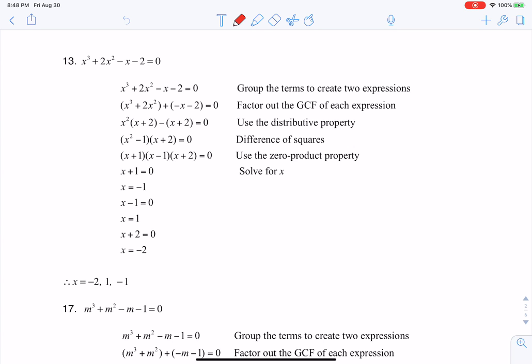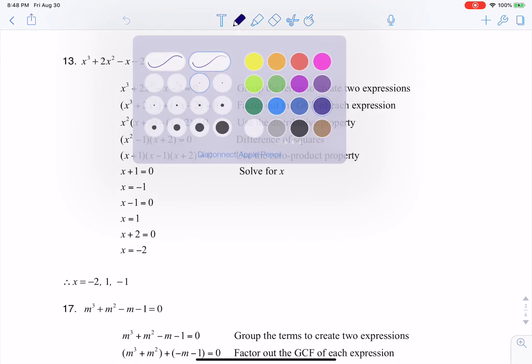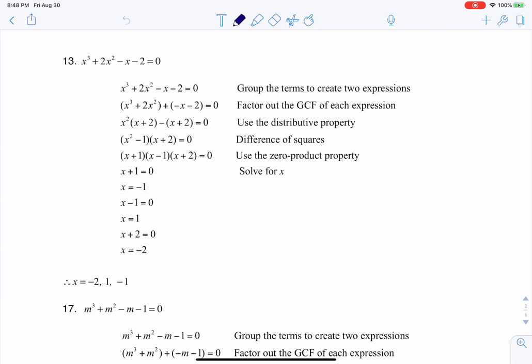So if you're ever asked to factor by grouping, typically what you want to do is group out of these four terms here we have, you usually group two together.